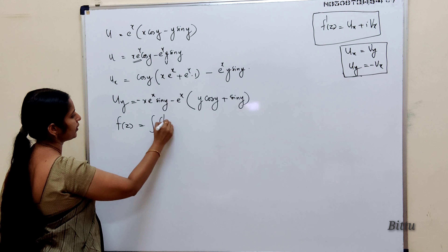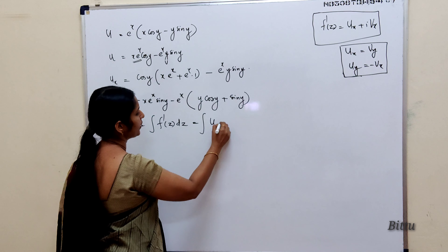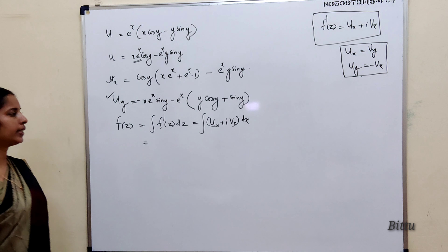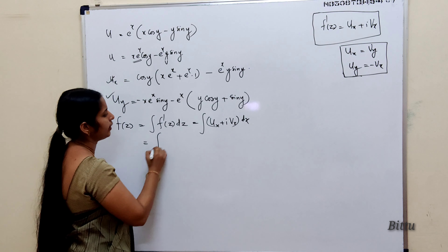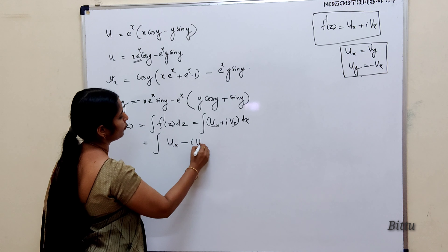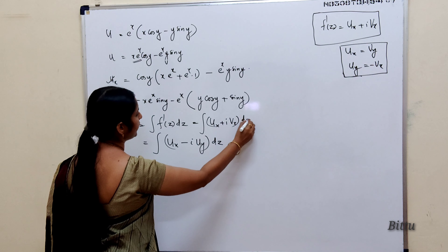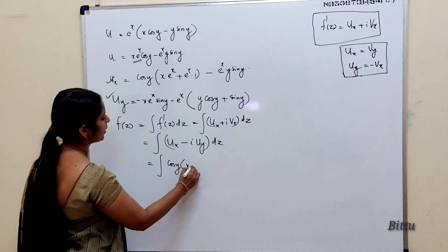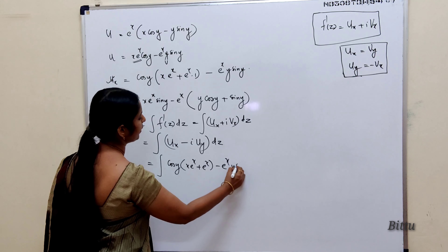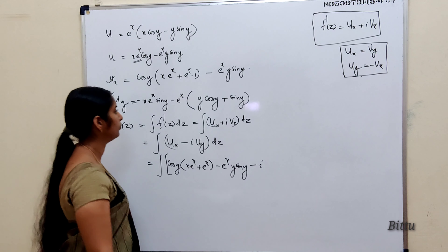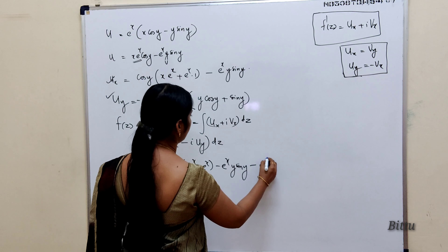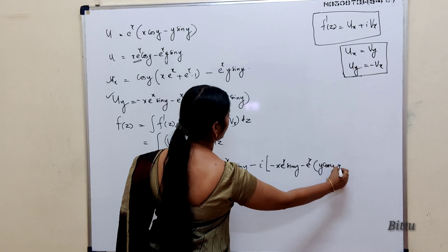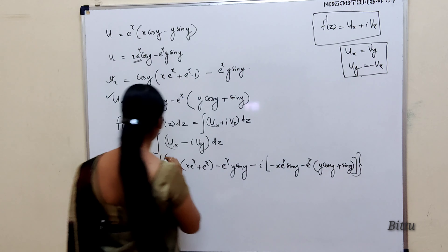We have f(z) = integral of f'(z) dz = integral of (u_x + i·v_x) dz. Here we have u_x and u_y, so replace v_x using the Cauchy-Riemann equations: v_x = −u_y. So f(z) = integral of (u_x − i·u_y) dz. Substituting: u_x = cos(y)·(x·e^x + e^x) − e^x·y·sin(y), and u_y = −x·e^x·sin(y) − e^x·(y·cos(y) + sin(y)).